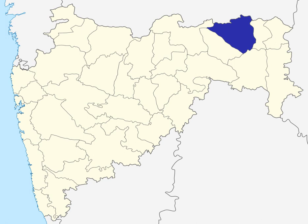According to the 2011 census, Nagpur district had a population of 4,653,171, roughly equal to the nation of Ireland or the U.S. state of South Carolina. This gives it a ranking of 29th in India out of a total of 640. The district has a population density of 470 inhabitants per square kilometer (1,200 per square mile). Its population growth rate over the decade 2001–2011 was 14.39%. Nagpur has a sex ratio of 948 females for every 1,000 males and a literacy rate of 89.52%. As of 2011, 64.26% of the population were urban.